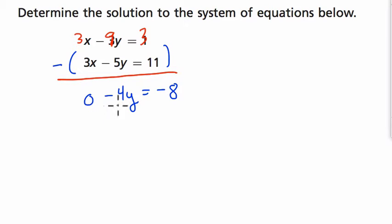And then I have 0 minus 4y, that's just negative 4y. This equals negative 8. Divide both sides by negative 4 and y equals 2.